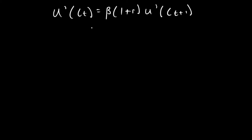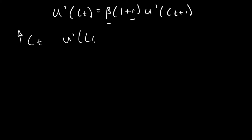So this is our Euler equation — consumption at time t plus 1 is the future period, and here is consumption at time t. Another significant aspect of this equation is how consumption changes over time across our two periods, based on how our rate of time preference beta changes and how the interest rate changes. An important concept to remember here is diminishing marginal utility: as ct or consumption in any period increases, the marginal utility from consumption will decrease.